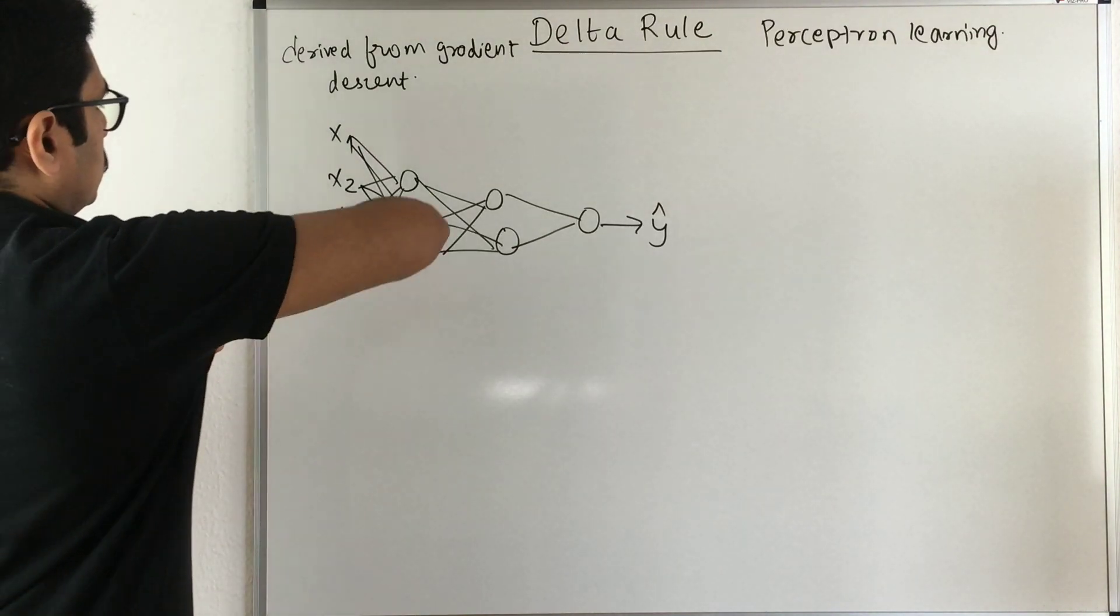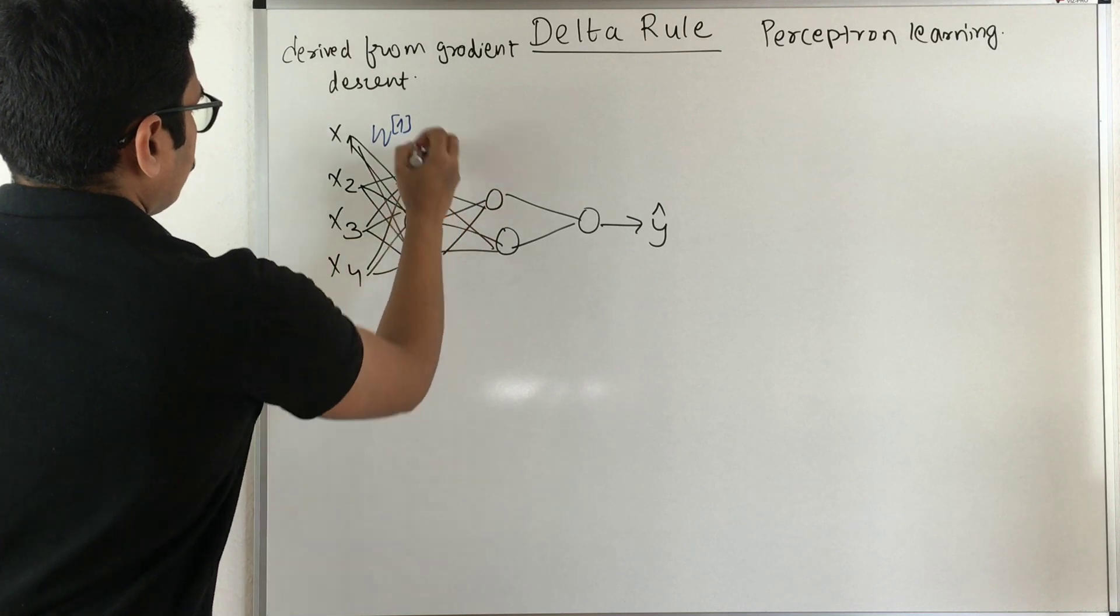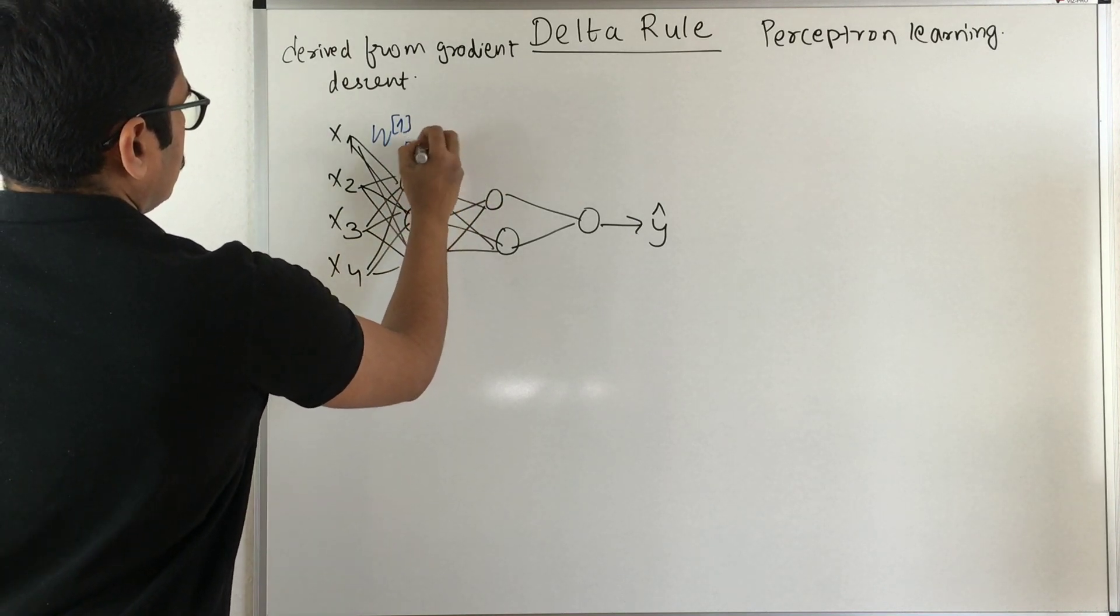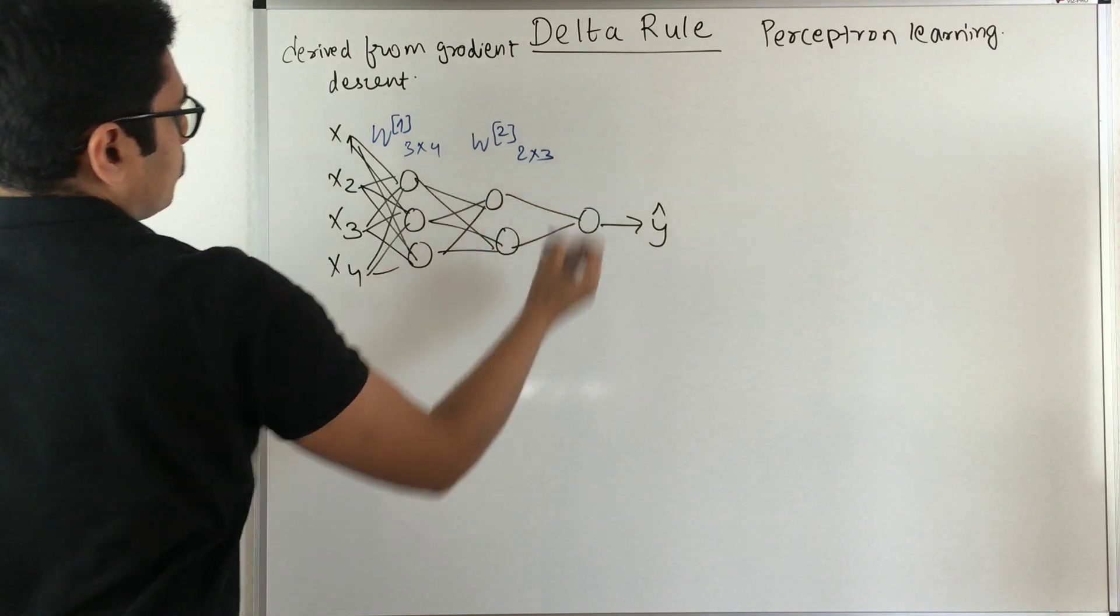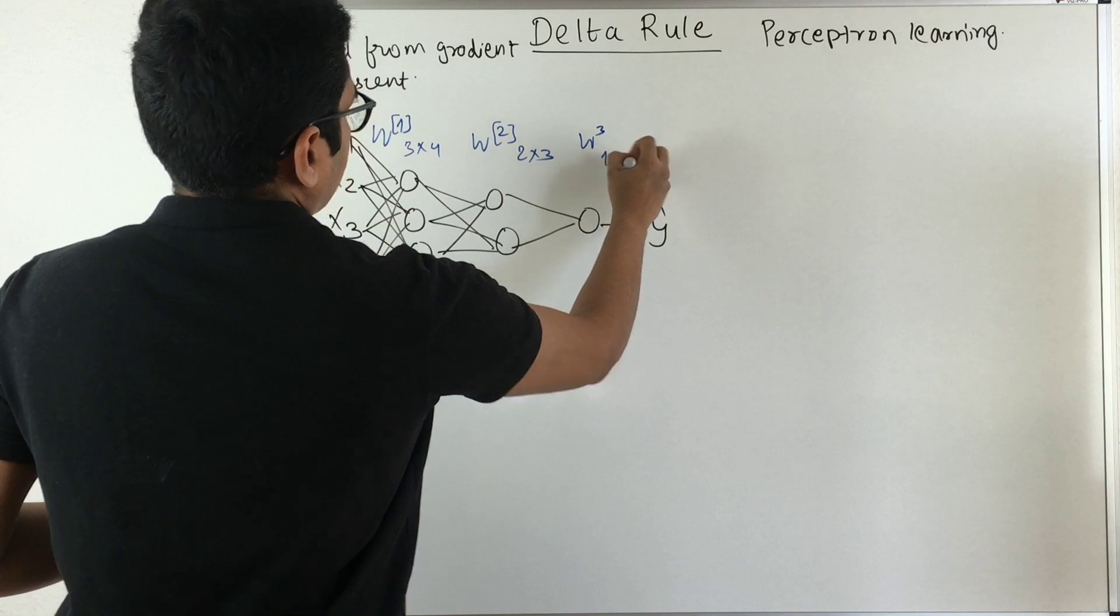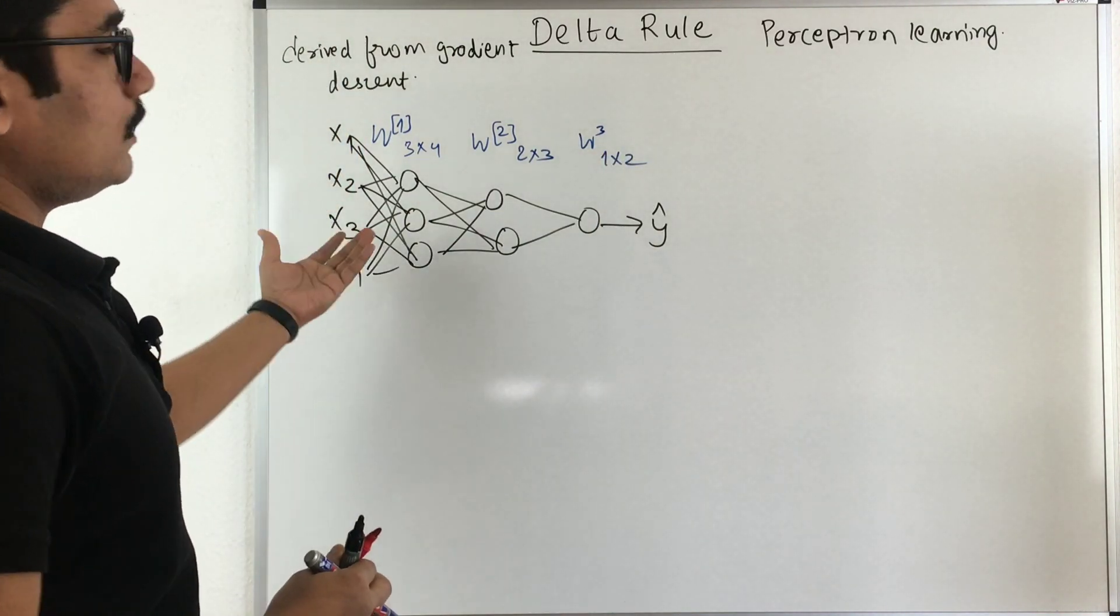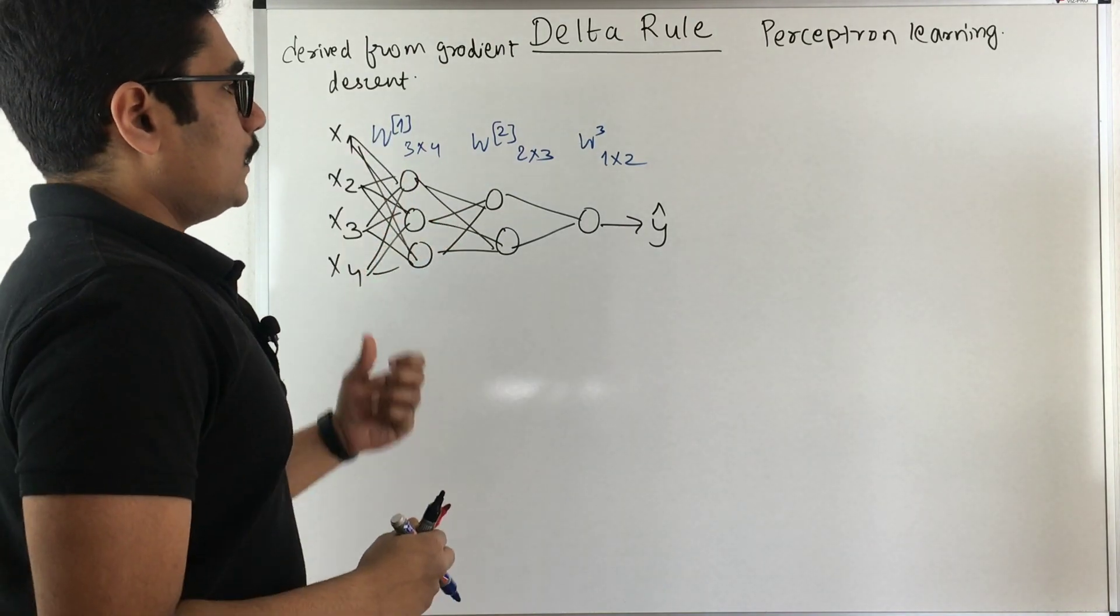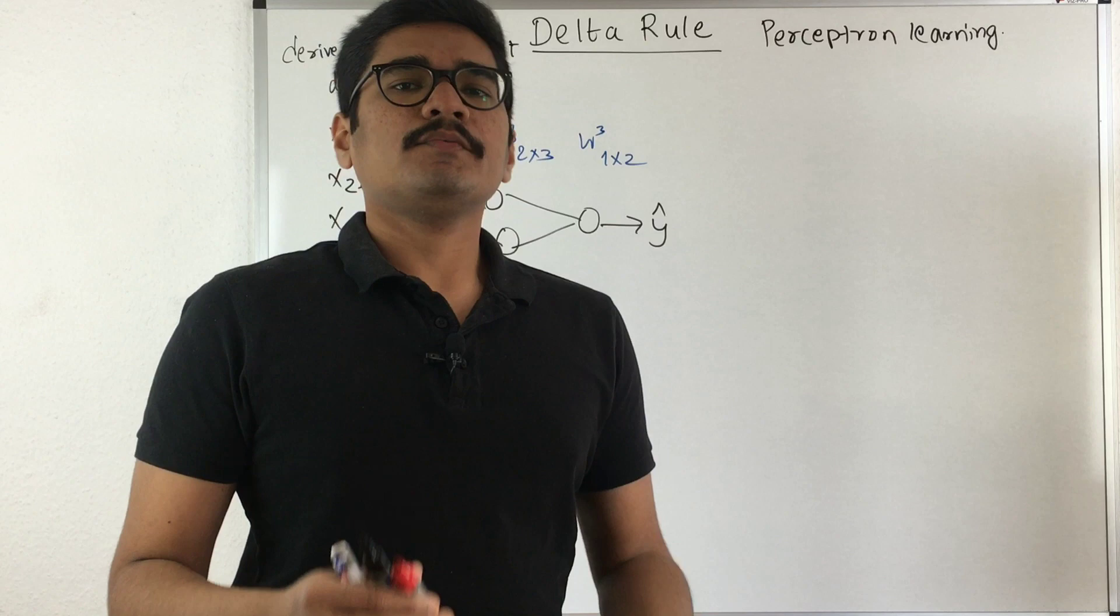You know that there are some weights present at this particular point. So you have a weight matrix of 3 cross 4, and then at the second layer you have a weight matrix of 2 cross 3, and then at the third layer you have a weight matrix of 1 cross 2. So our major goal is to learn these weights. That is the major goal when we implement the neural networks or whenever we do deep learning.